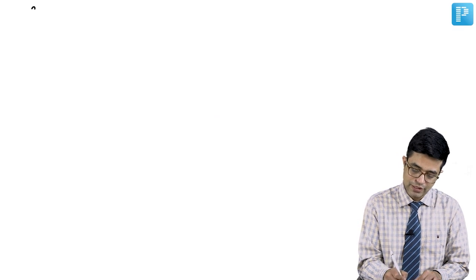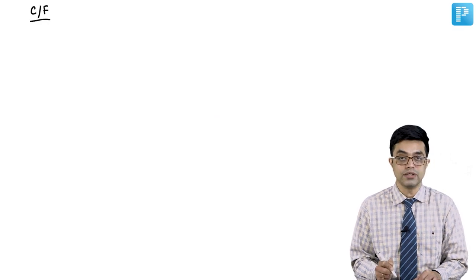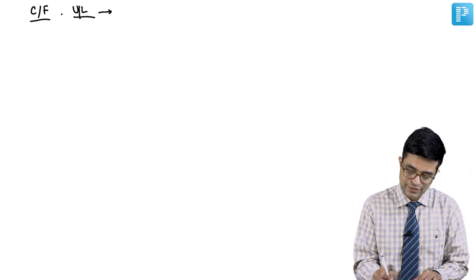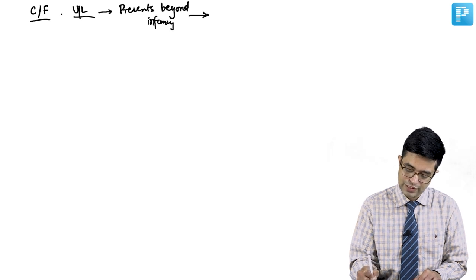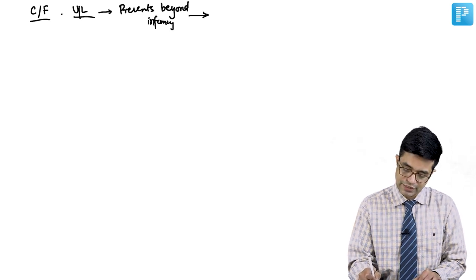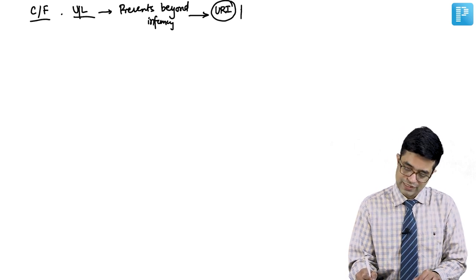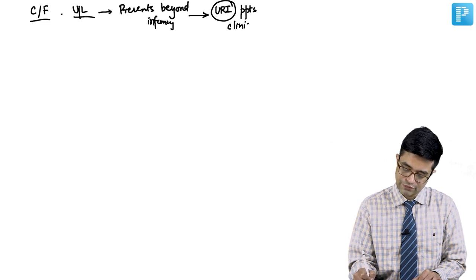Clinical features depend on the type of choanal atresia. Unilateral choanal atresia is often missed and presents beyond infancy. It usually becomes manifest during an upper respiratory infection, which precipitates the clinical manifestations; otherwise it may often be missed.